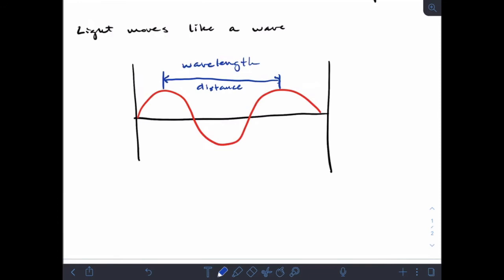We can talk about that in meters or nanometers or kilometers—any kind of distance—to describe the length of one wave. The other important thing is how many waves pass in one second, which is called frequency.